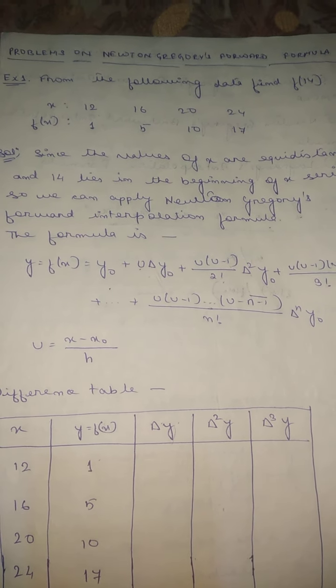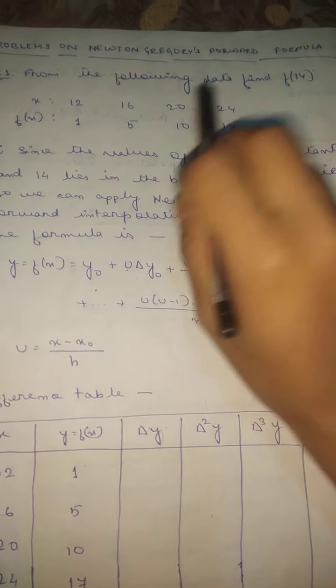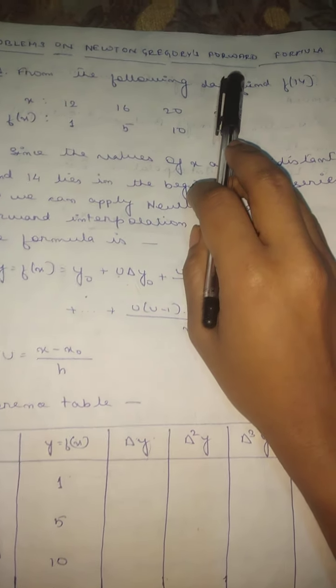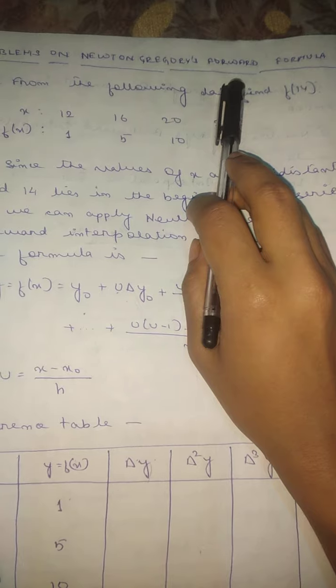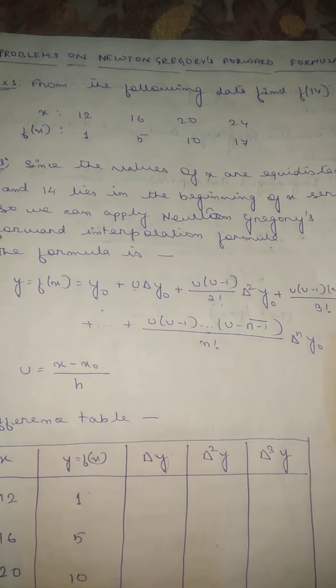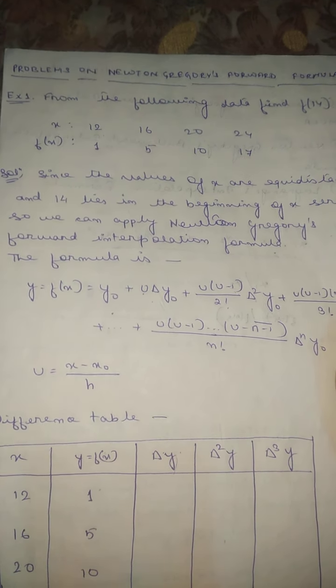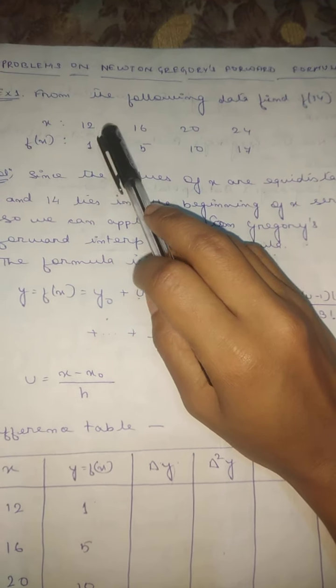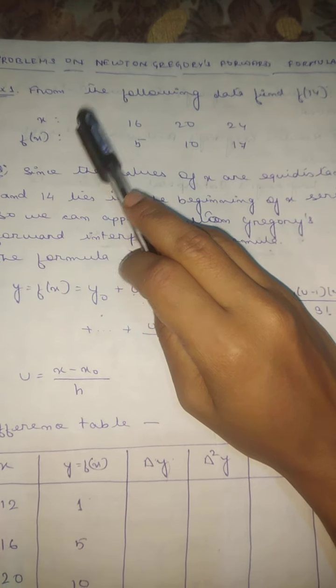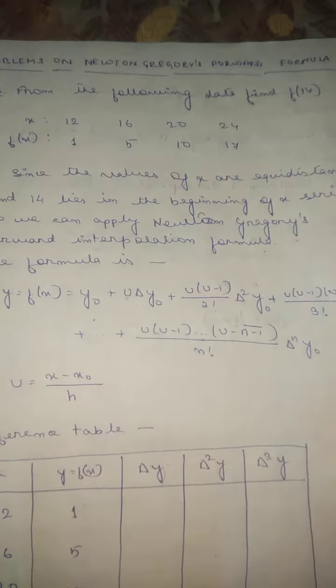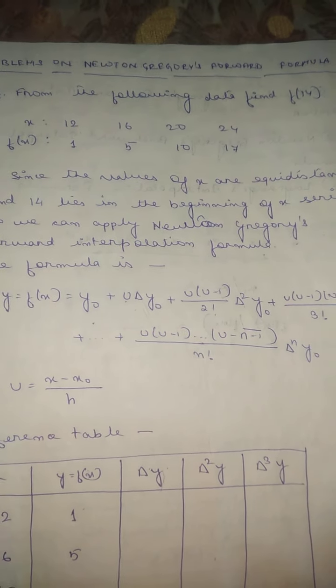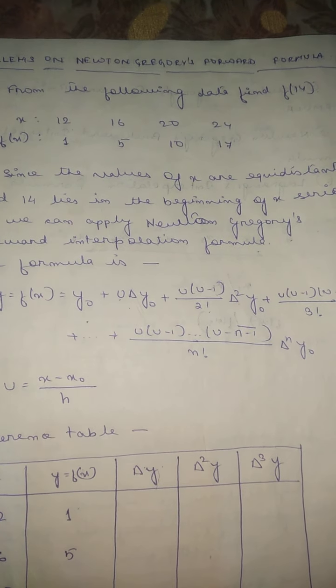Students, I am solving a Newton Gregory's forward interpolation formula problem. This is the first example: from the following data, find F(14).